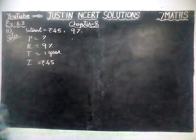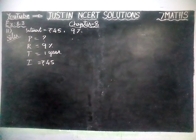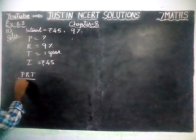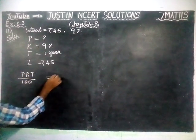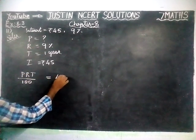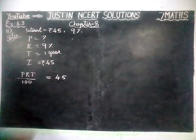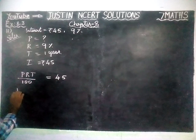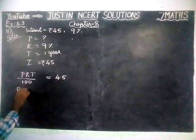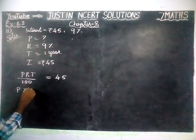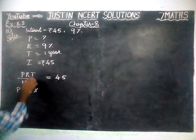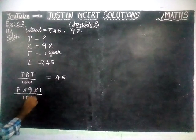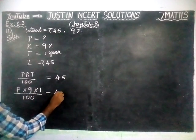Now, we are going to use that formula. PRT divided by 100 is equal to 45. The interest amount is equal to 45. Principal amount we don't know, so we keep it as P. Rate of interest is equal to 9, Time is equal to 1, divided by 100, is equal to 45.